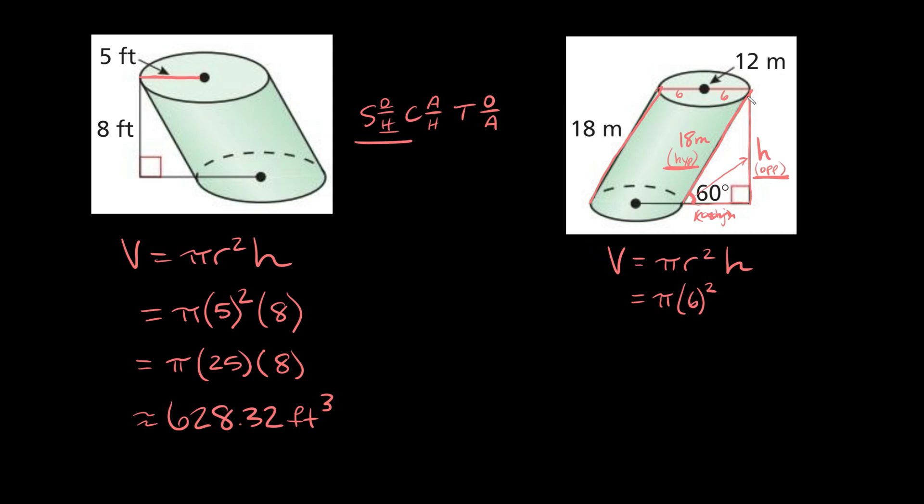So in order to solve for the height here, we're going to say sine of the angle that we're using or that we're given right here, 60 degrees, is equal to the opposite side over the hypotenuse. So the opposite side we've labeled as H, and the hypotenuse is 18 meters. Now in order to solve for H, let's get rid of this 18 by multiplying both sides by 18. Those cancel out. So over here we get 18 times the sine of 60, which is equal to approximately 15.59. And that's equal to this side, which is just H. So that's the height, approximately, of the triangle, and more specifically, it's the height of the cylinder.